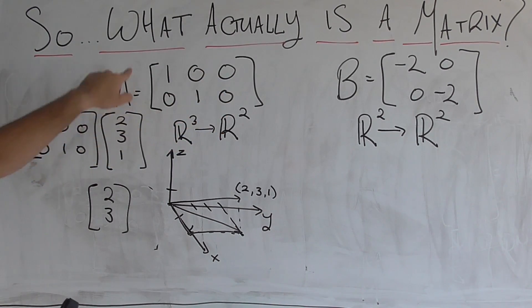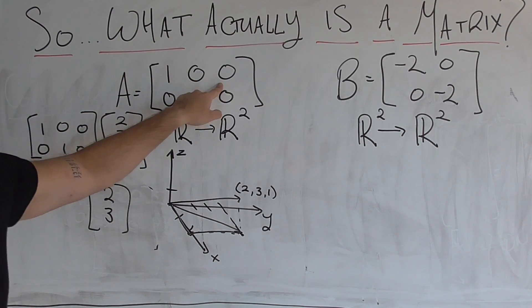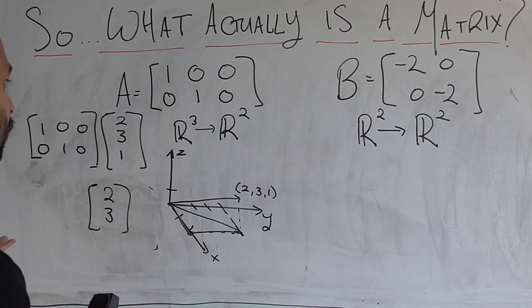Because basically what this transformation is doing is preserving the X coordinate, preserving the Y coordinate, and zeroing out the Z coordinate. So the Z coordinate always ends up as zero. In fact, it doesn't even really exist anymore.